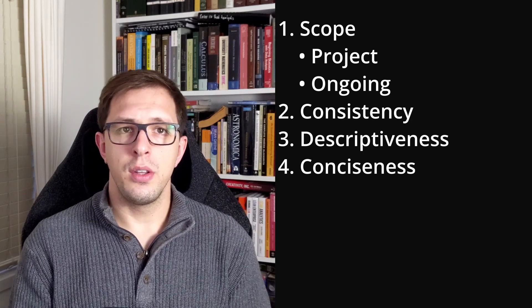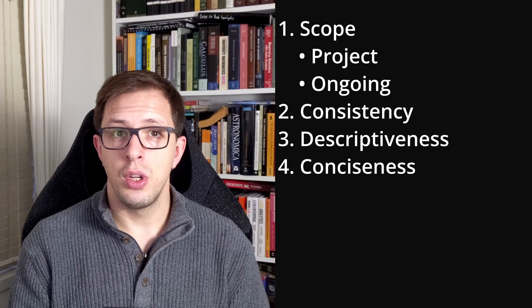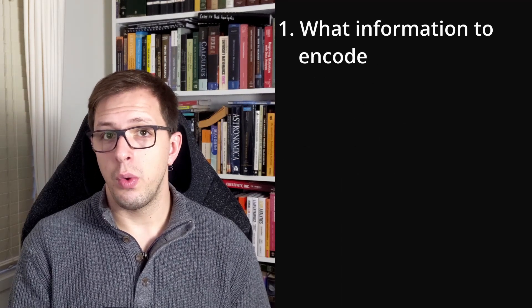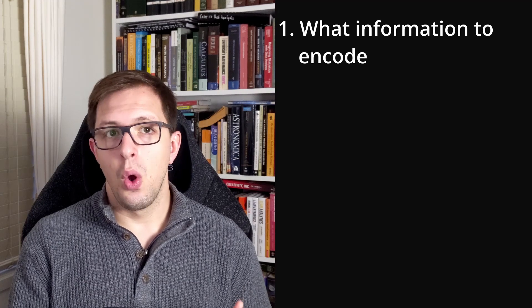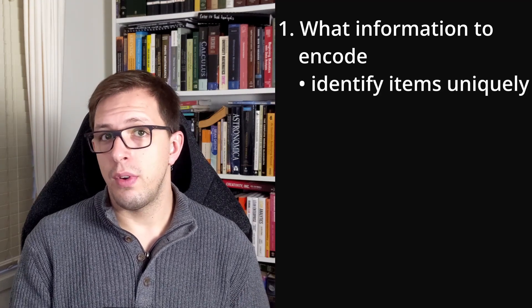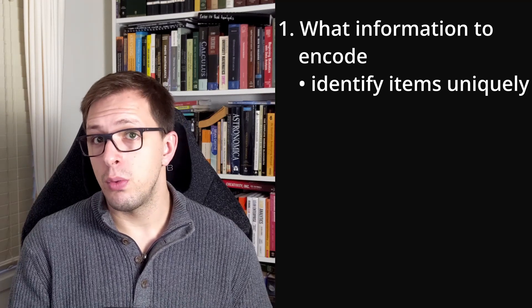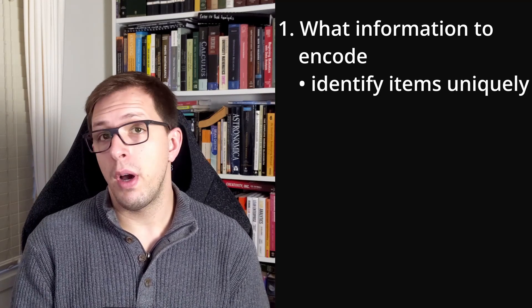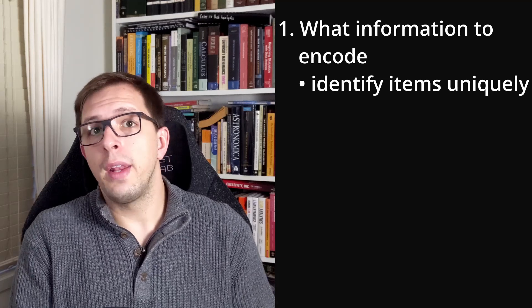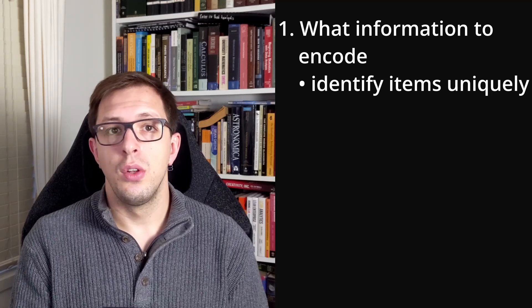With these principles in mind, to start crafting a naming convention, you'll need to answer two questions. One, what information do I want to encode? In other words, what information do you need to identify the items uniquely? This could be the date, version number, name of the person who made it, your client, what part of the project it's from, or anything else really.